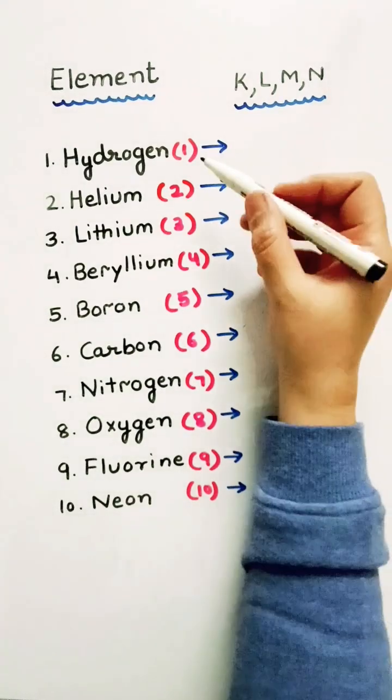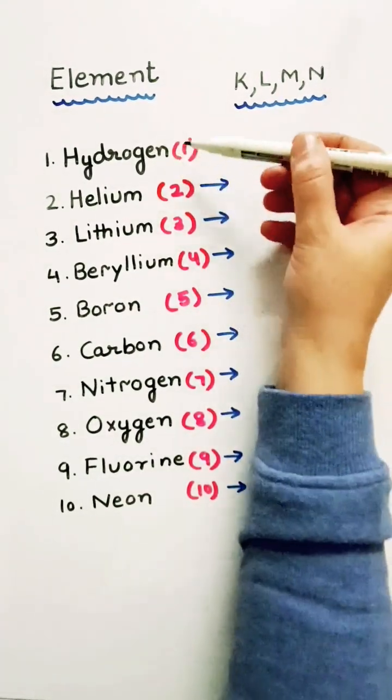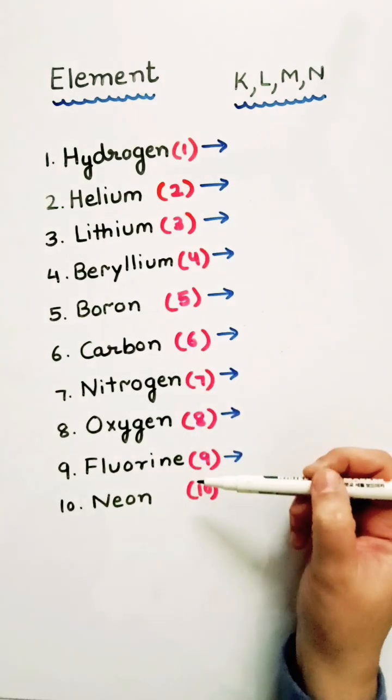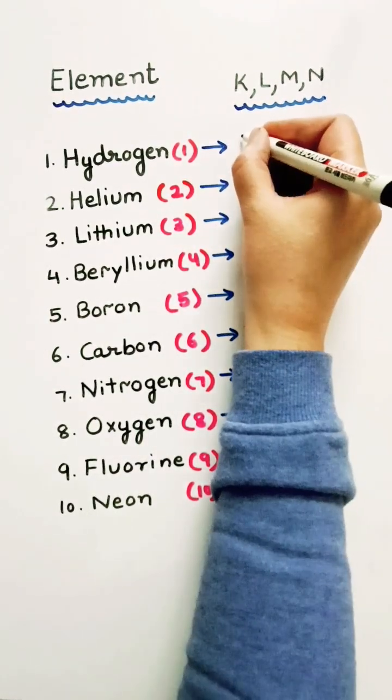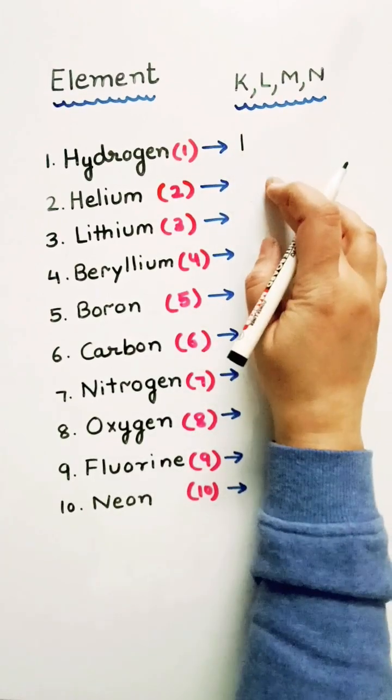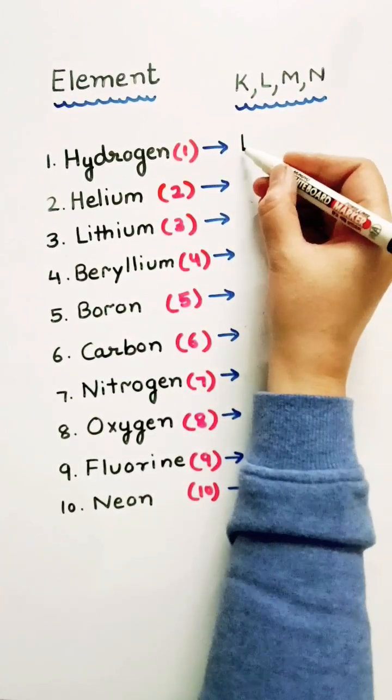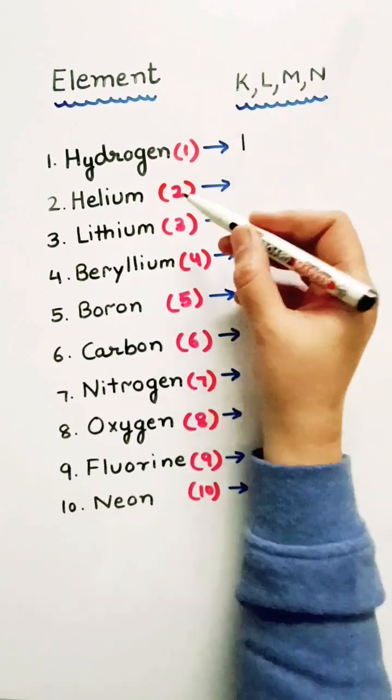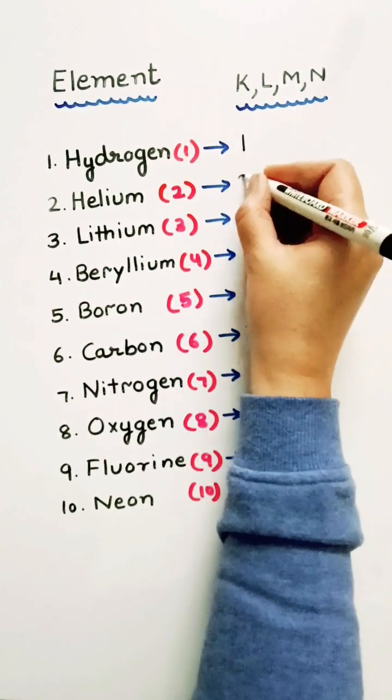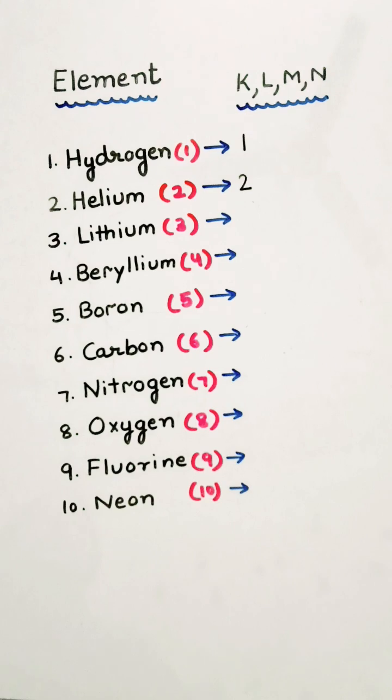Now, the first element is hydrogen and these are the atomic numbers. Hydrogen has only one electron. That means as per 2N square rule, we have one electron in K shell. Now, helium, it is having two electrons.